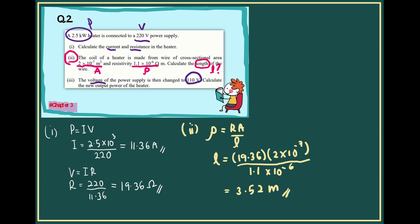For question number three, we're applying the equation for power, P = V squared over R. Our V is 110 squared over R. We're using the same resistance.